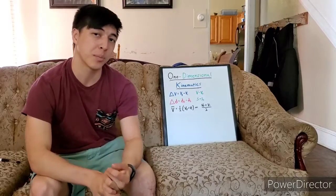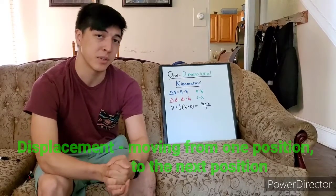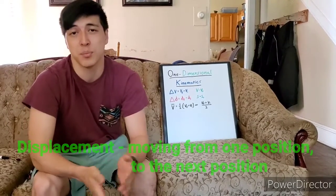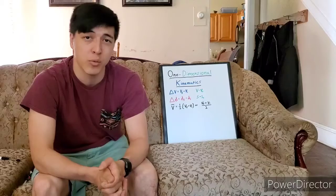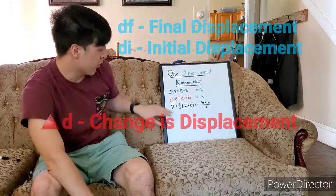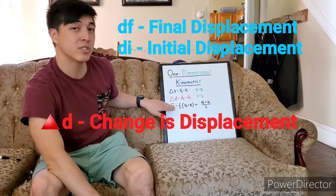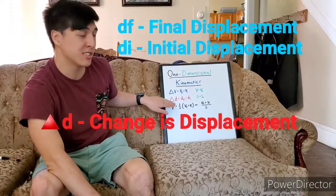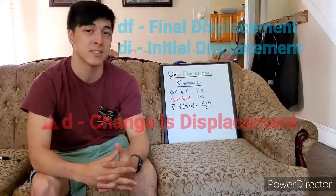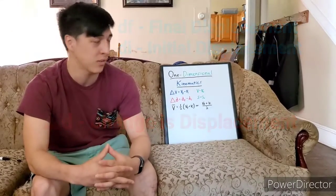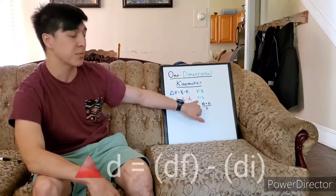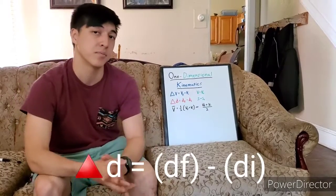The next term we're going to talk about is displacement. In most textbooks, it's written as X, but for the simplicity of this video, we will use D. So delta D, or change in displacement, is measured as final displacement minus initial displacement — or, in most textbooks, S minus S₀.